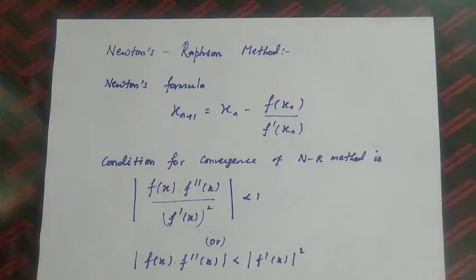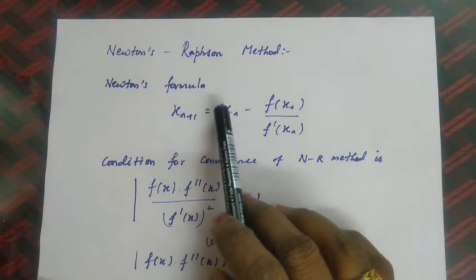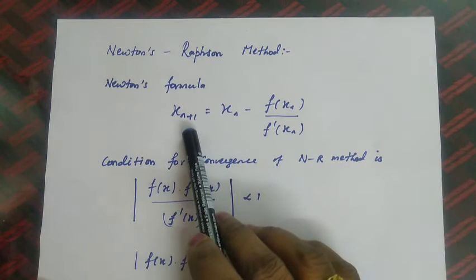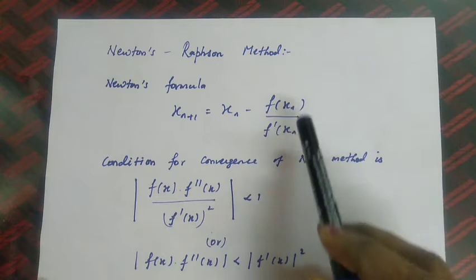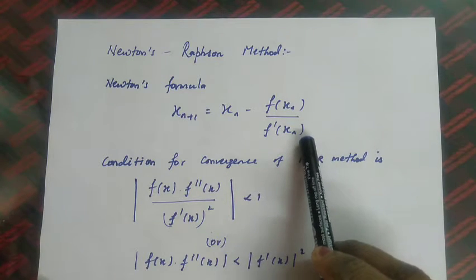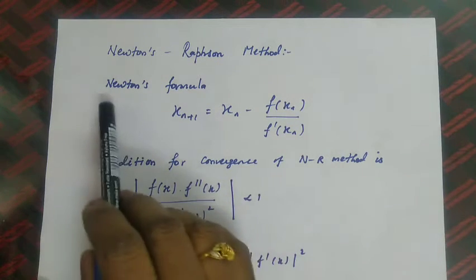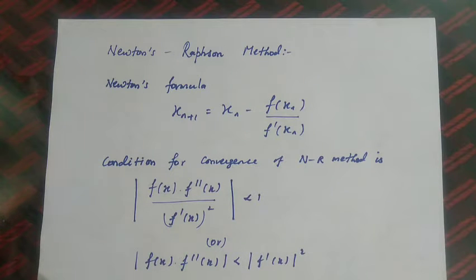Welcome to the lecture series on numerical methods. Today we are going to discuss Newton's Raphson method. The Newton-Raphson formula is x_{n+1} = x_n - f(x_n) / f'(x_n). This is the Newton's formula, and we will also look at the condition for convergence of the NR method.